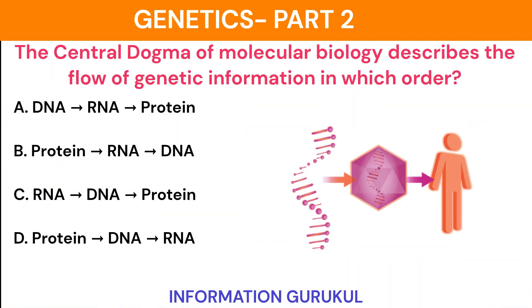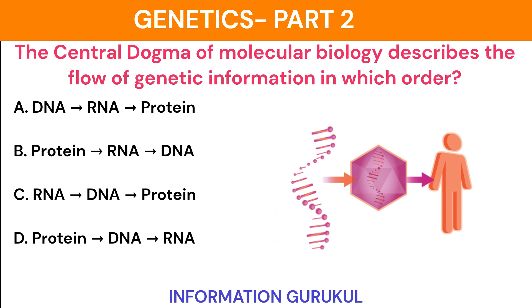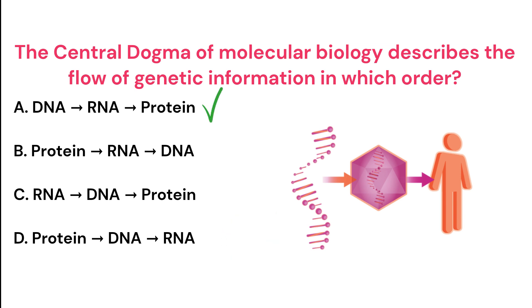The central dogma of molecular biology describes the flow of genetic information in which order? DNA → RNA → PROTEIN